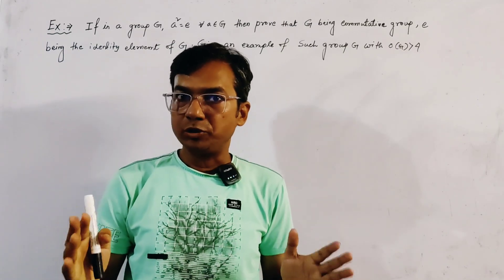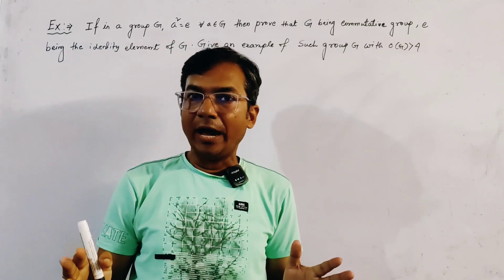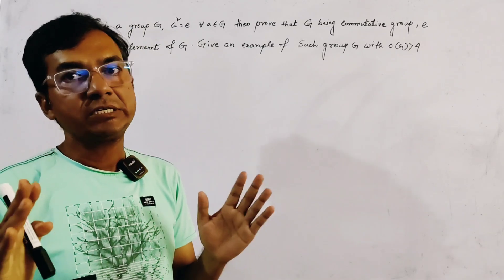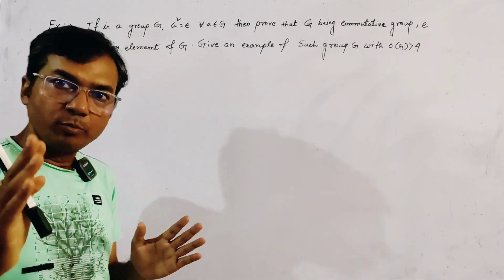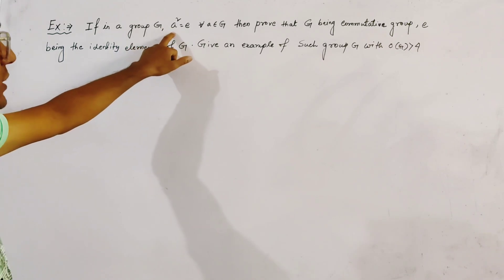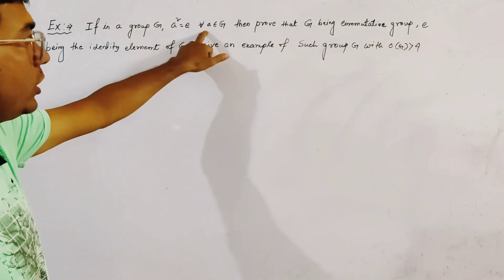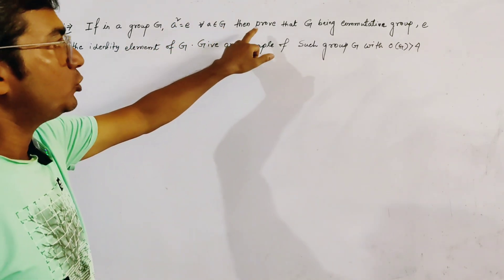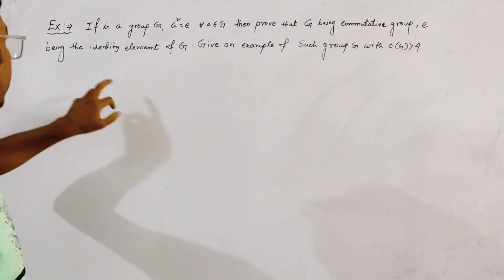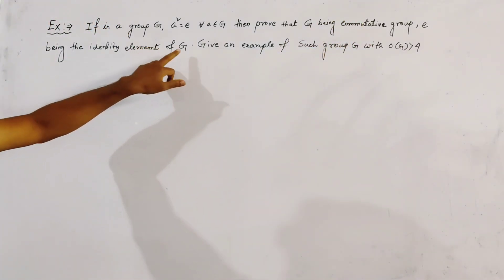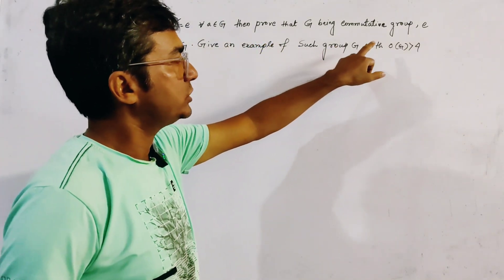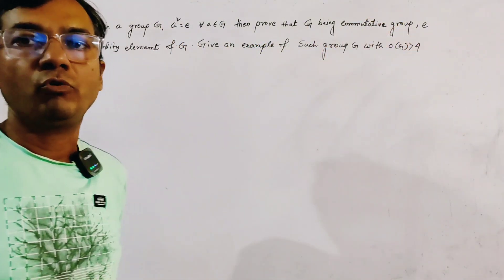This problem is from group theory, also from a university previous year paper. The problem is: if in a group G, a² = e for all a belonging to G, then prove that G is a commutative group, where e is the identity element of G. Also, give an example of such a group G with order of G greater than 4.